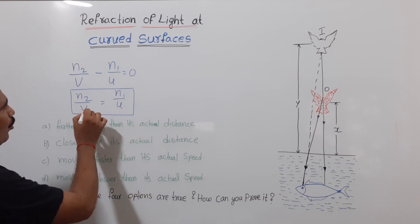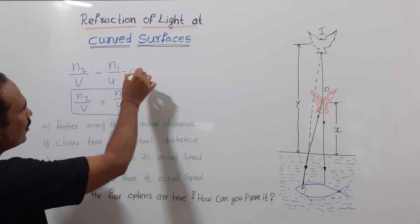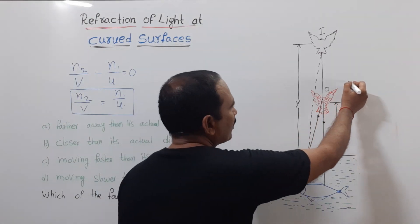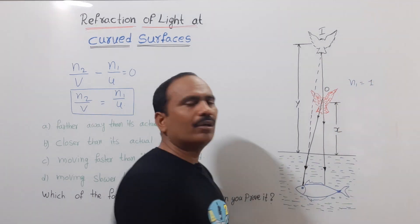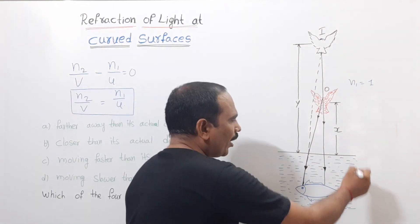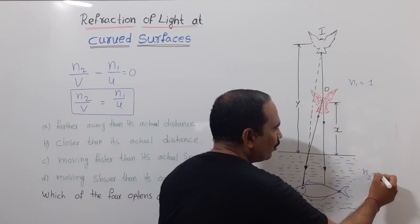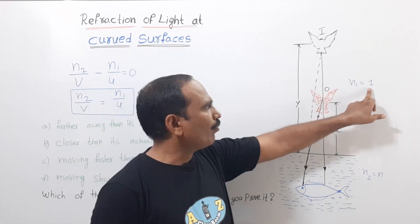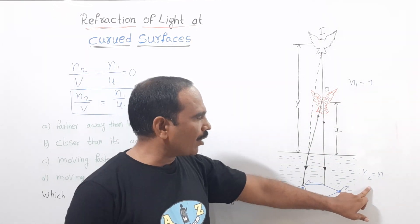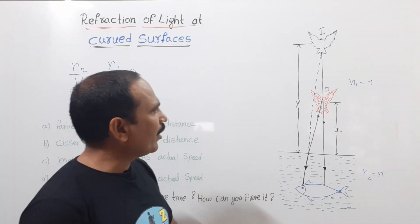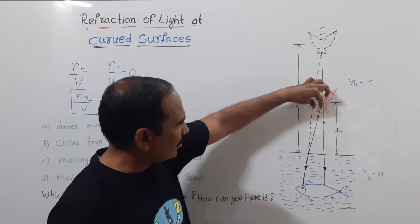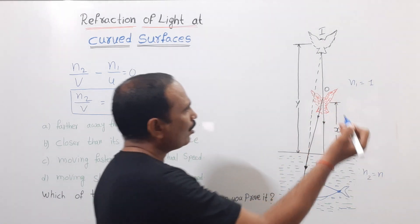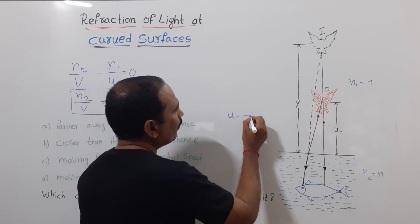We know the formula for refraction of light at plane surfaces: n2/v = n1/u. The refractive index of air is n1 = 1. The refractive index of water is n2 = n. We are measuring the height of the object from the surface of the water in the upward direction, so the object distance u = −x.